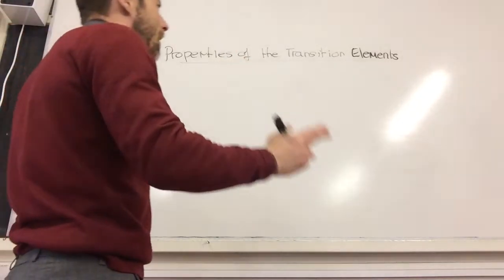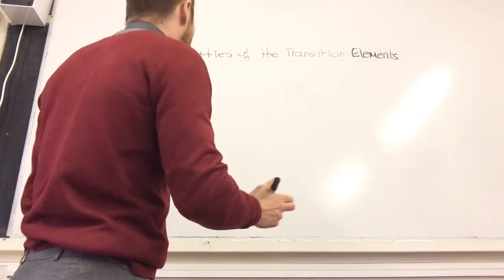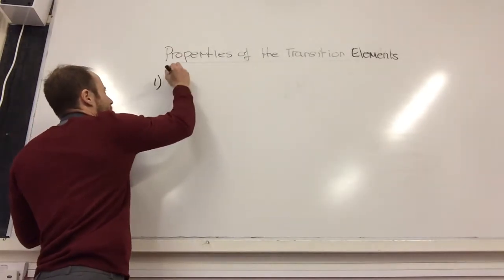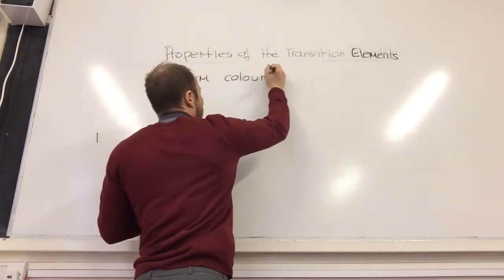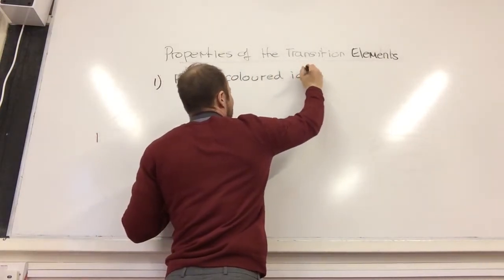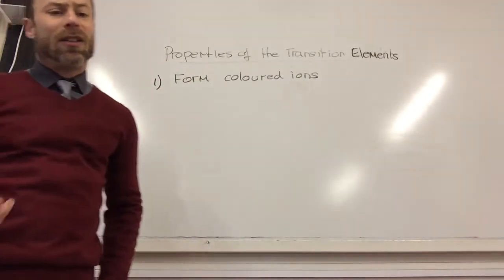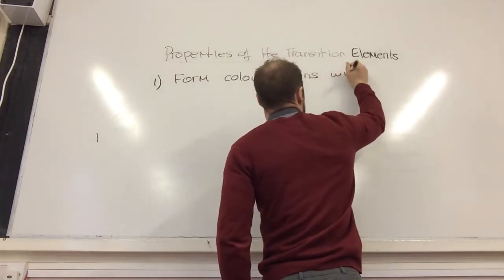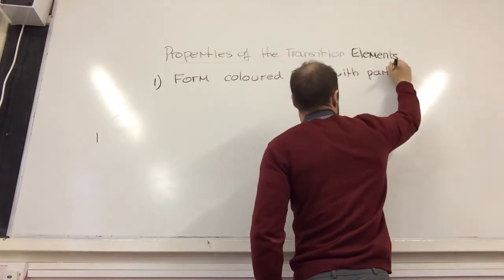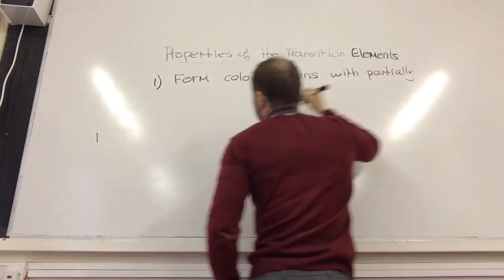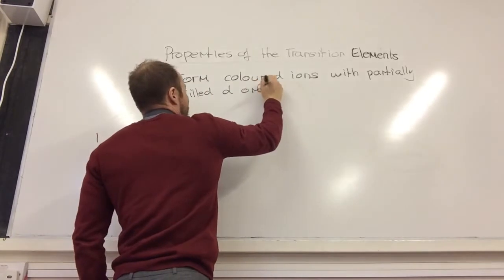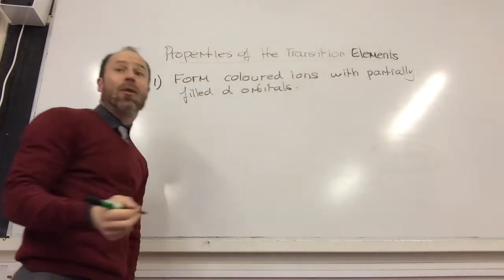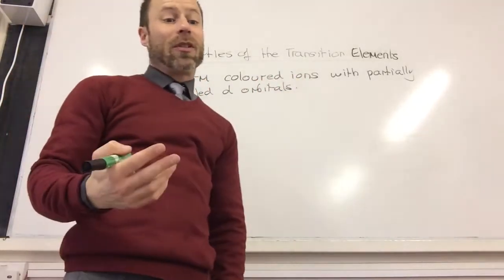Right, so remember these are specific properties of the transition elements. Property number one is they form colored ions. And you need to know a few colors of these - colored ions with partially filled d-orbitals. It's because they've got partially filled d-orbitals, that's what gives them these colors.